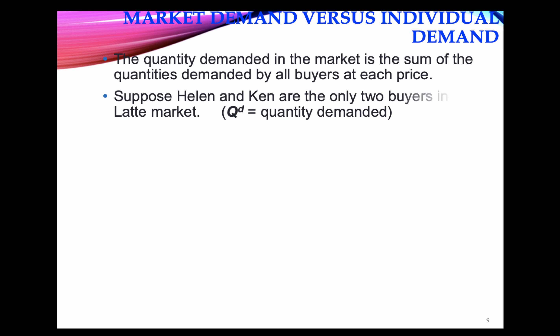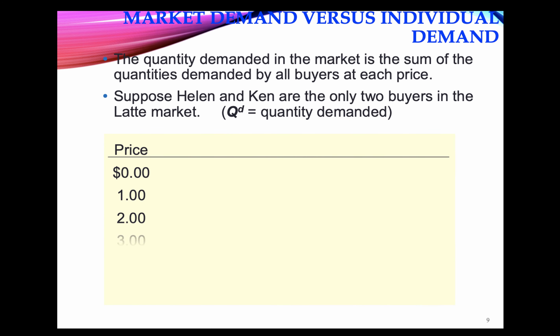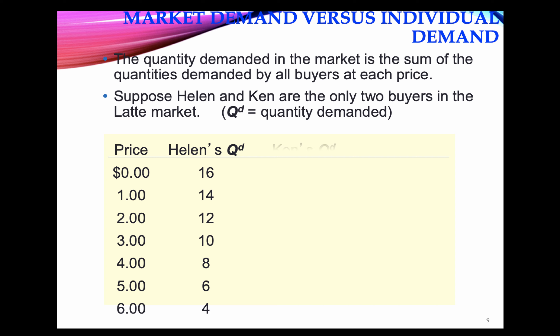Let's think about two individuals — this applies to more than two as well. We take the same individual Helen's demand function from before and add another individual, Ken. So in this case, we have two individuals and we want to derive the market demand.